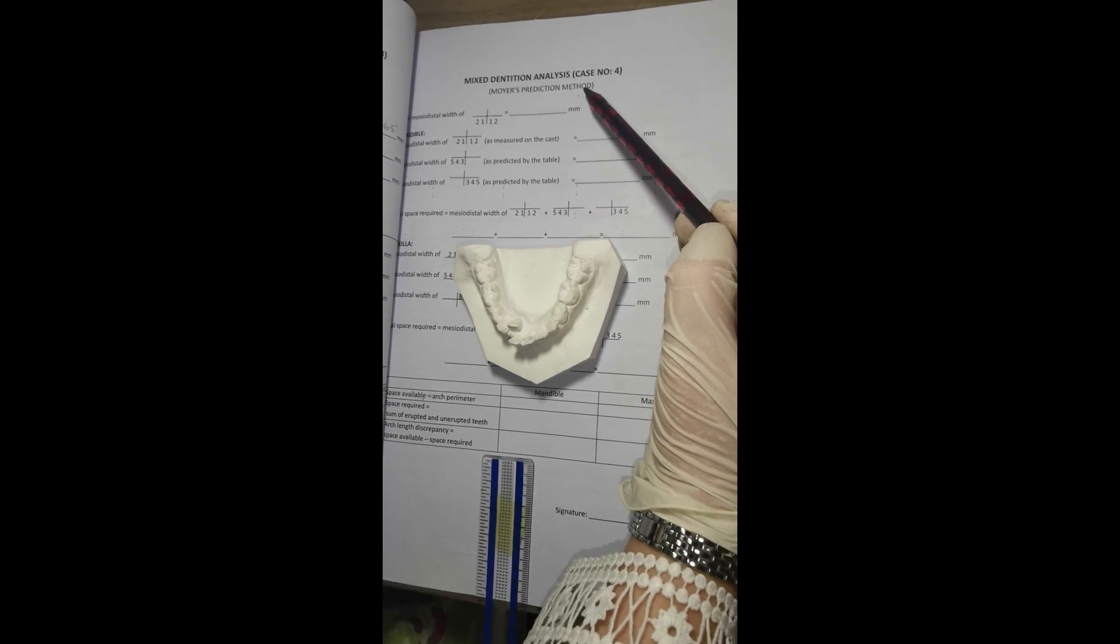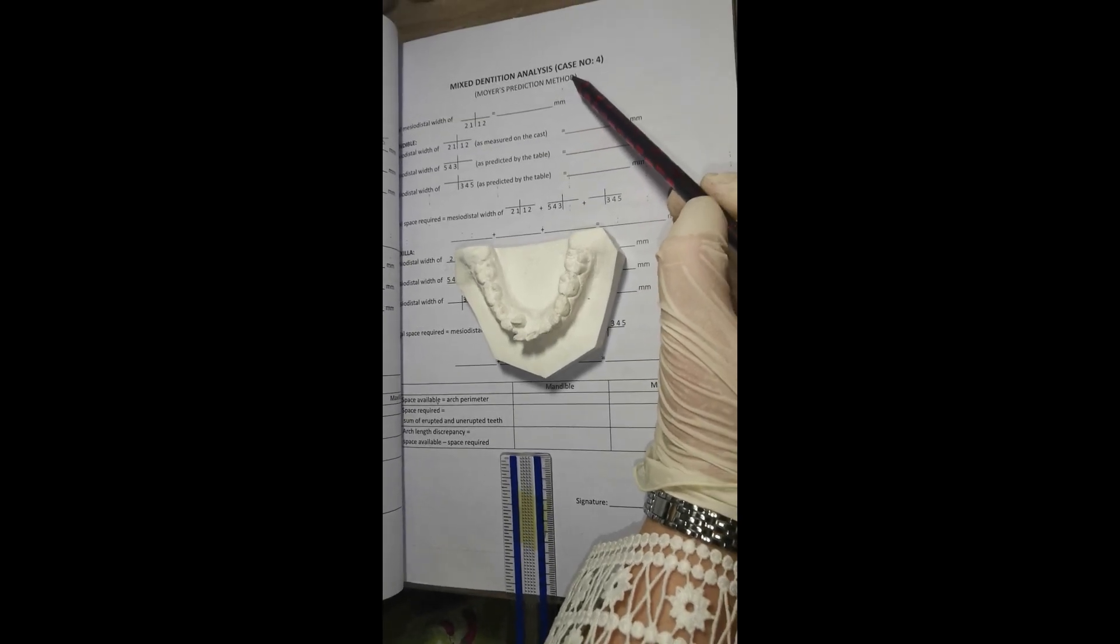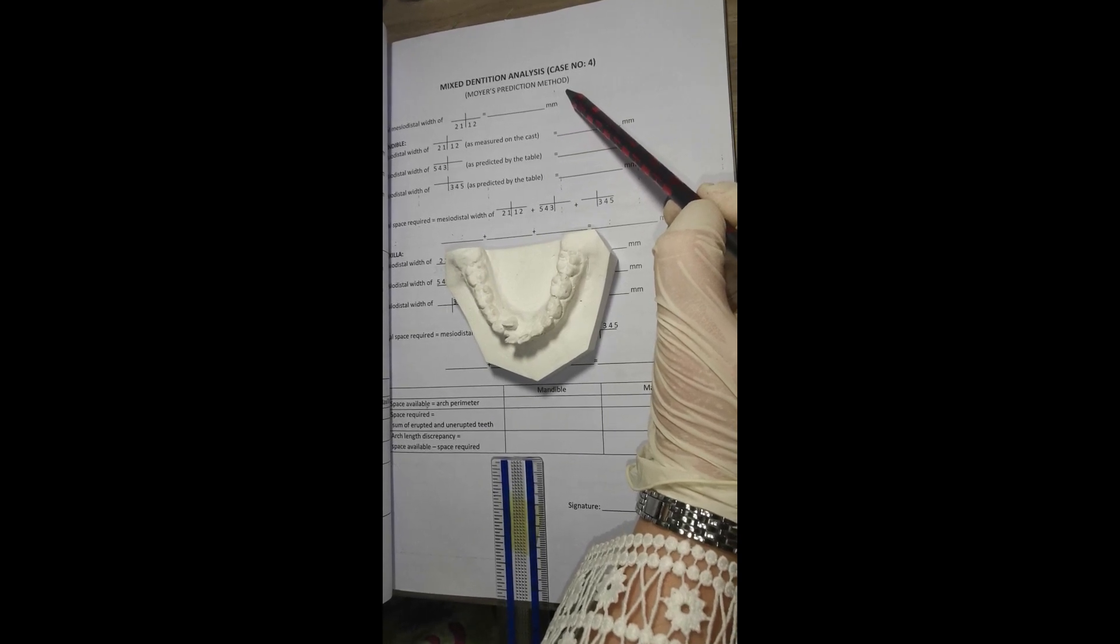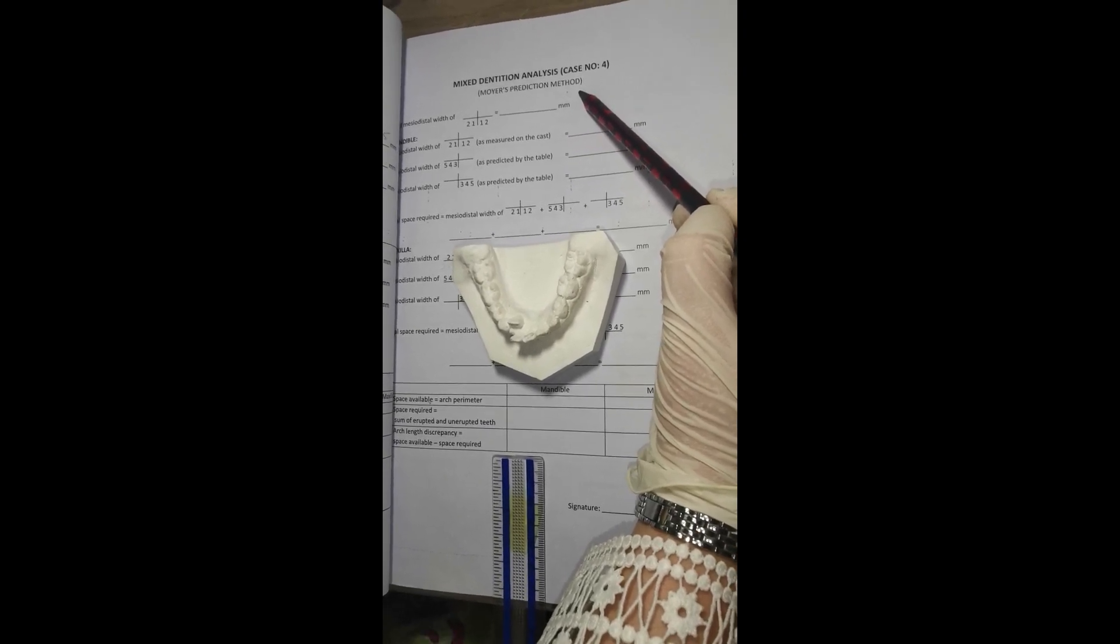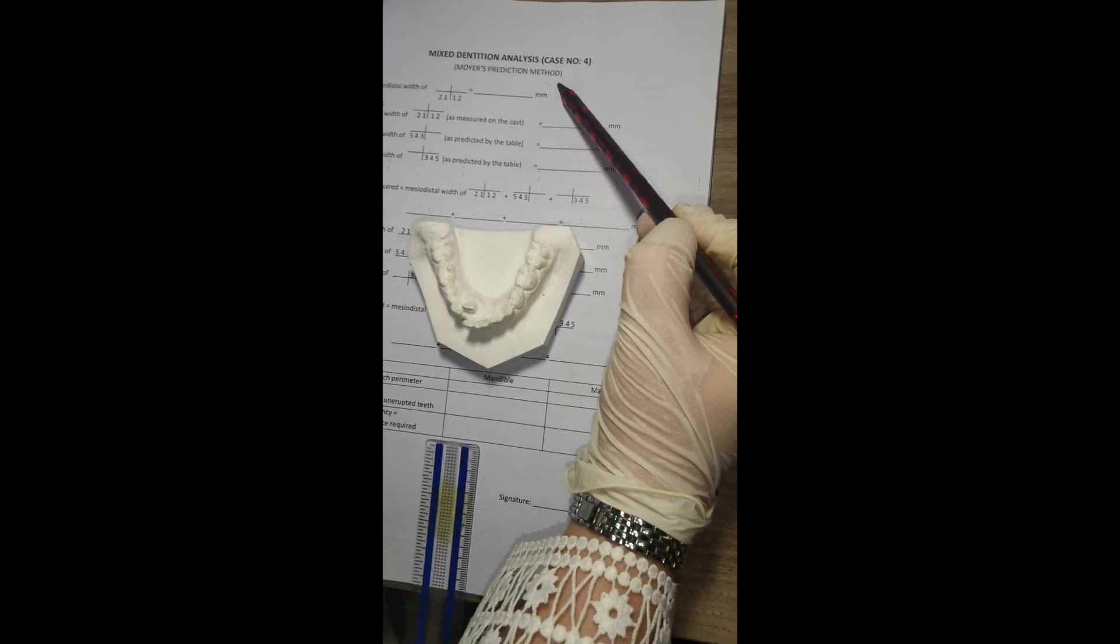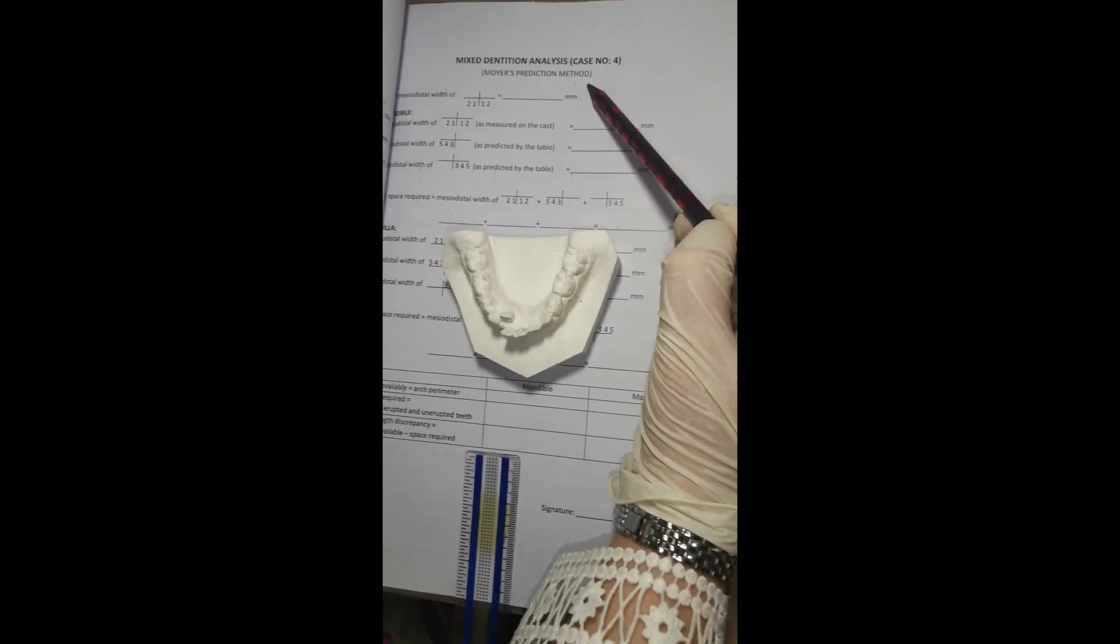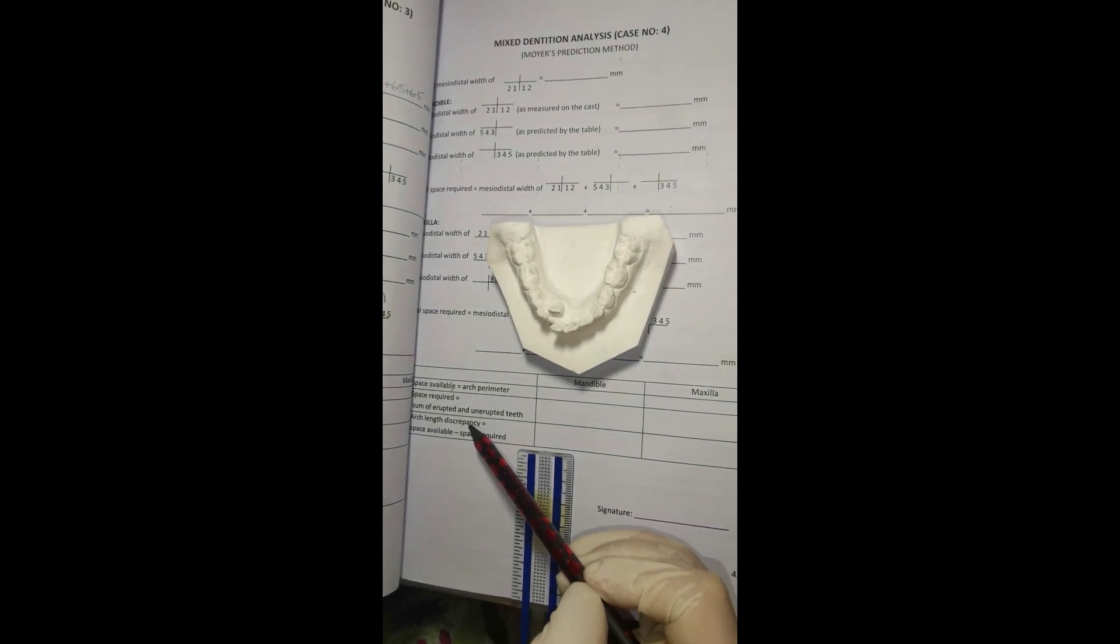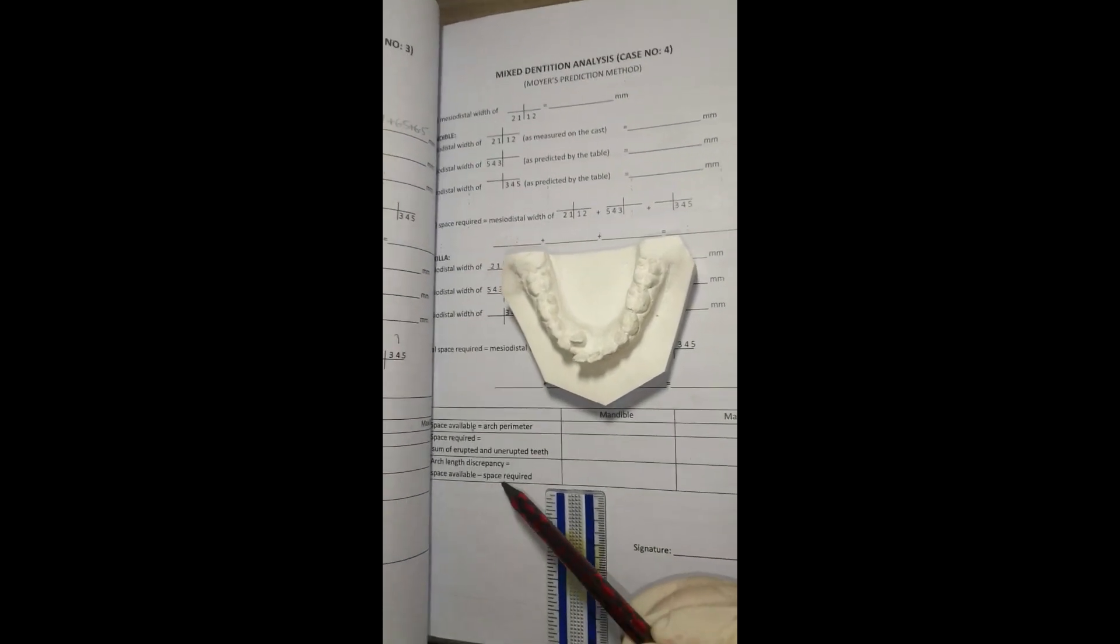In this video, I will tell you about mixed dentition analysis or space analysis in mixed dentition using Moyer's prediction method. As we already know, the aim of space analysis is to find out arch length discrepancy, which is space available minus space required.